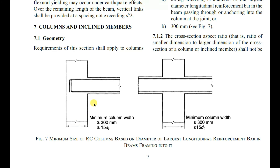As shown in figure 7, the minimum column width shall be more than 300 mm or 20dB — where dB is the largest diameter of the longitudinal bar in the beam passing through the column. The beam passes through the column, so whichever bar in that beam has the largest diameter is used for the calculation.